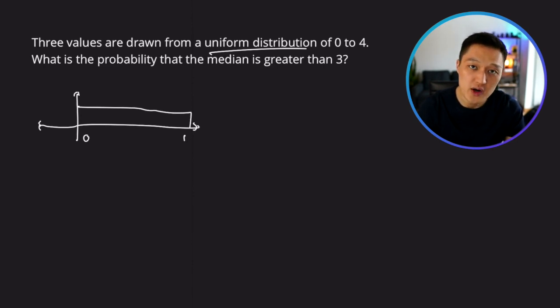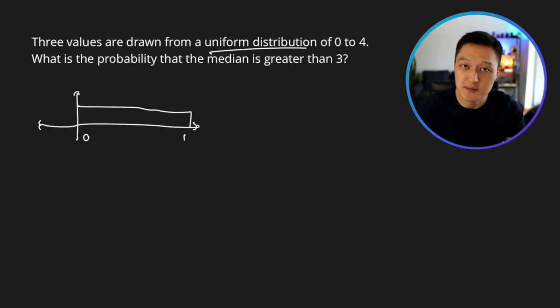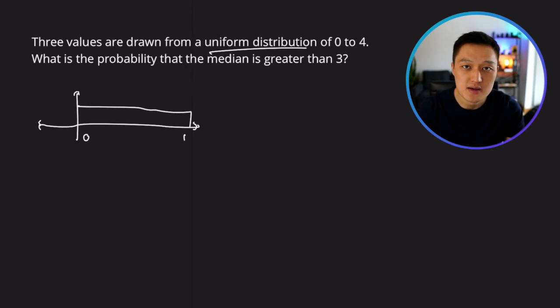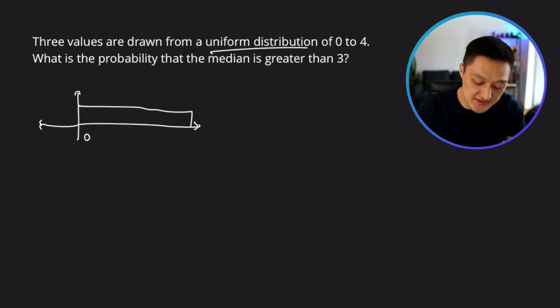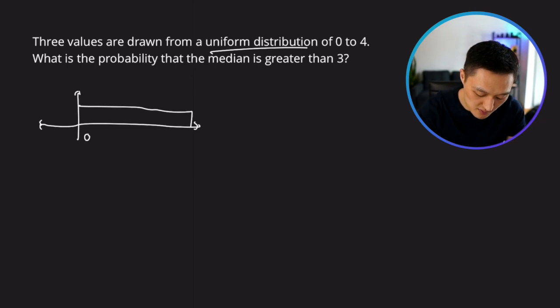So on one sample it could be 0.5, another could be 0.6, 0.77, and so forth. In this case, the cutoff at the very far end is going to be four.